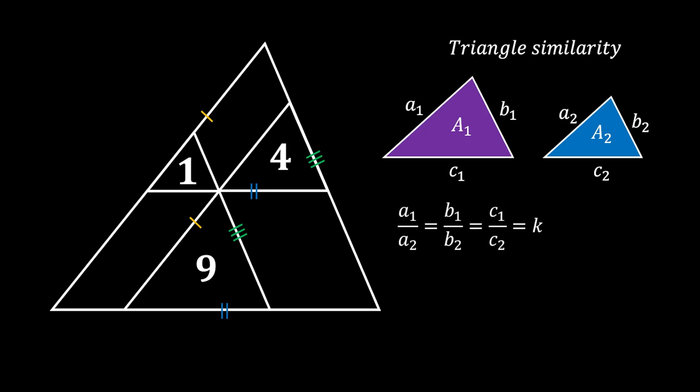This relation is equal to the factor of similarity, which we can label as k. We also know that the relation between their areas must be equal to the squared factor of similarity — in this case, that is k².